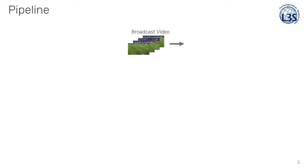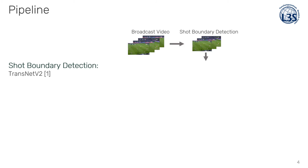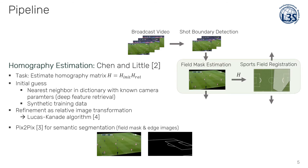Let's get started with the pipeline for player position estimation. As some shot types like close-ups are not of interest for the task, we first apply shot boundary detection using TransNet as an optional pre-processing step for edited broadcasts. The next step in the pipeline is to find a mapping between two-dimensional pixel coordinates of the pitch and the respective normalized real-world positions, which is basically a plane-to-plane mapping that can be expressed by a homography matrix H.